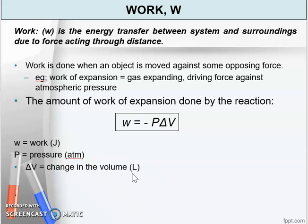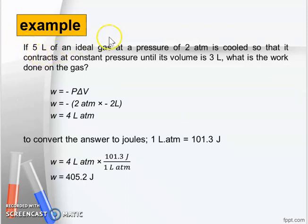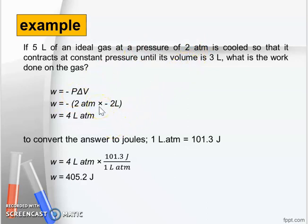Change in volume means the volume of the gas from initial to final. For example: if 5 liters of an ideal gas at 2 atm is cooled so that it contracts at constant pressure until its volume is 3 liters, what is the work done? We substitute into W equals negative P delta V: W equals negative 2 atm times (3 minus 5) liters, giving negative 2 liters, so W equals 4 liter·atm.